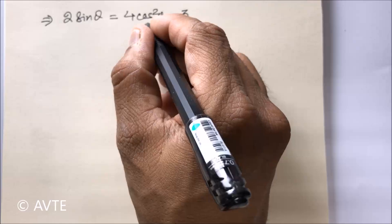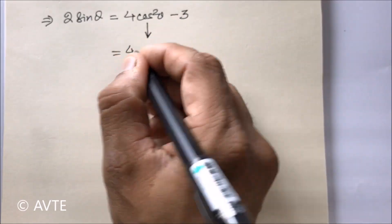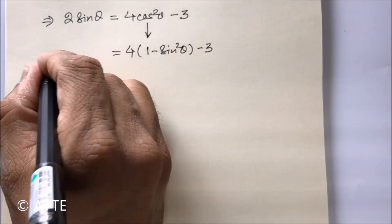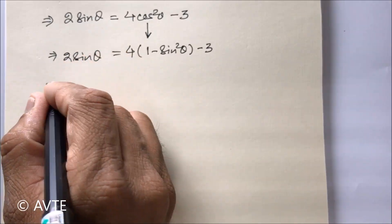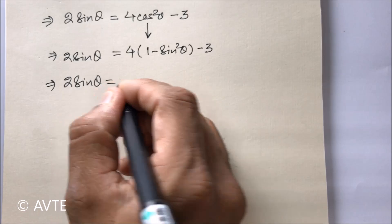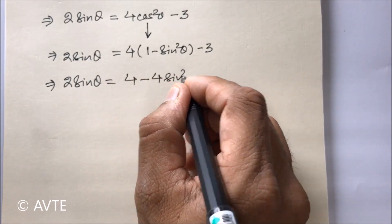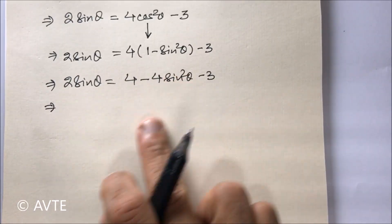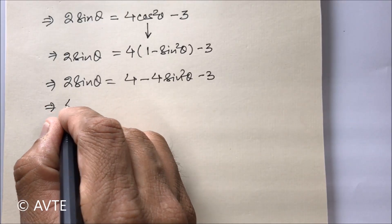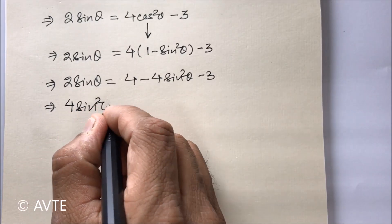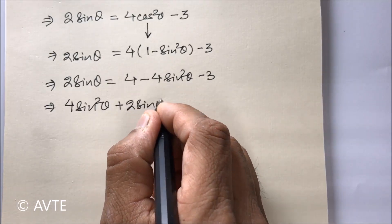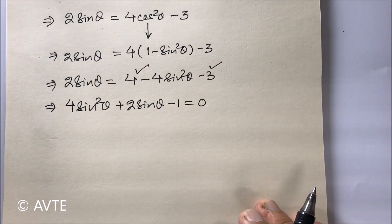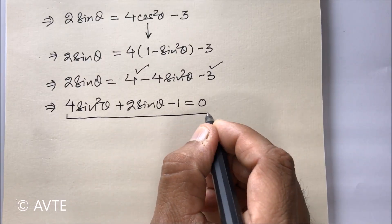This cos squared theta must be written in terms of sine, so we substitute cos squared theta as 1 minus sine squared theta. The left-hand side remains the same. Taking everything to the left-hand side and simplifying, 4 minus 3 gives 1, and moving 1 to the other side turns it to minus 1, giving us a quadratic equation in sine theta.